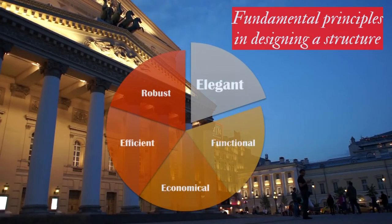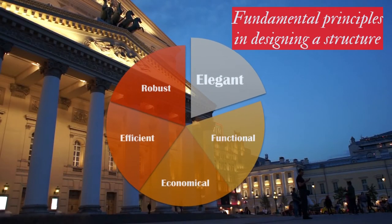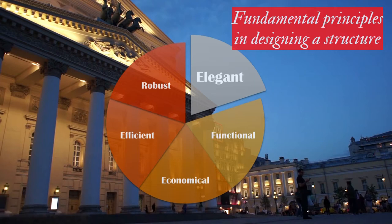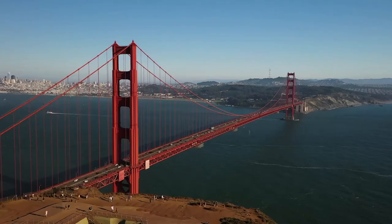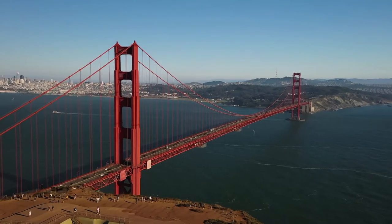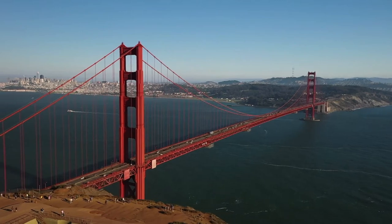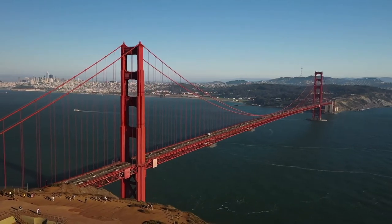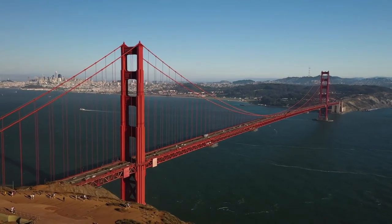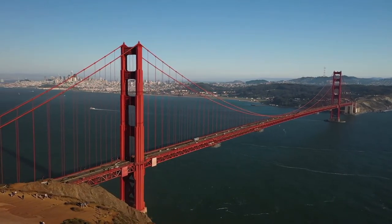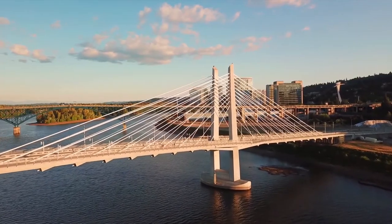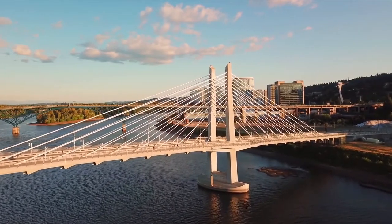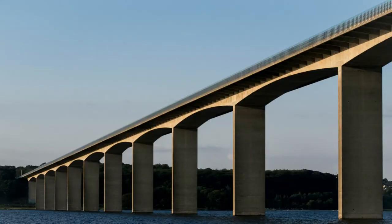As an inevitable structural element, the architectural design of vertical supports plays a vital role in presenting an elegant structure. In bridges, the aesthetics design is normally carried out by looking at the environment, scale, and character of the site holistically. Some bridges' piers are elegant for their simple forms expressing the flow of forces, while others are attractive for their slenderness.